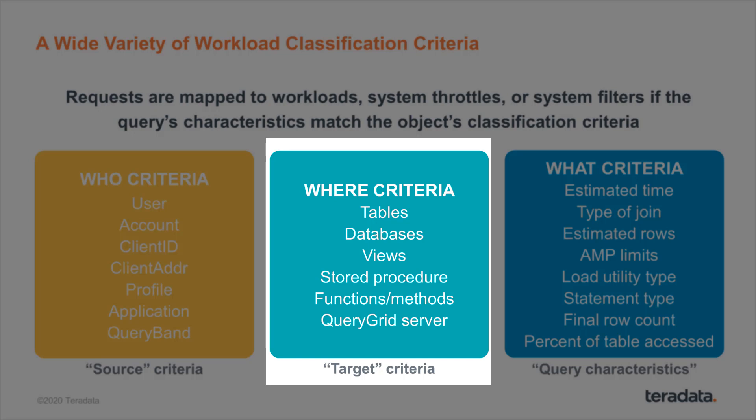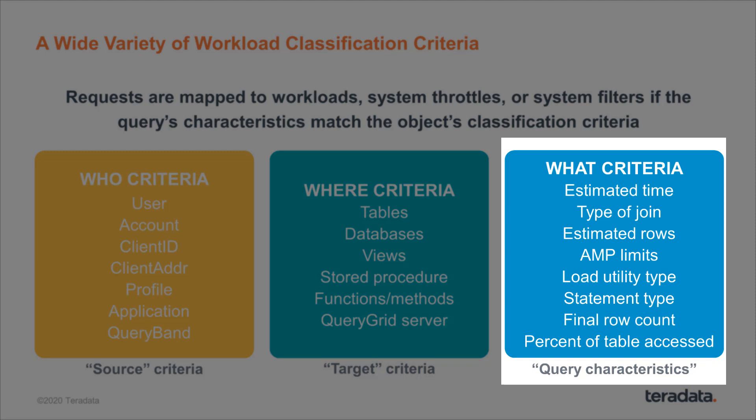One of the new types of WHERE criteria is the query grid server. For example, if you're accessing a foreign server, you can use the name of that foreign server as classification criteria for a workload, so any query that enters the system accessing that particular foreign server can map to a single workload or a single throttle. The third classification criteria is the WHAT criteria — basically your query characteristics, like whether it's an all-AMP request, whether there's DDL, or if it's a collect statistics statement. One of the most popular WHAT criteria is estimated processing time, which is used to classify shorter queries to one workload at a higher priority, and longer queries to a different workload.